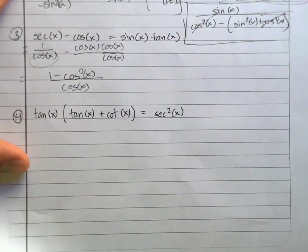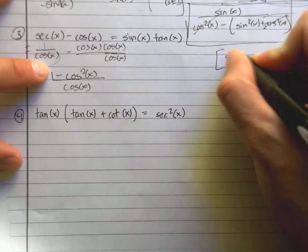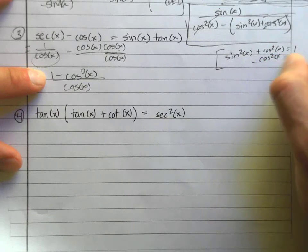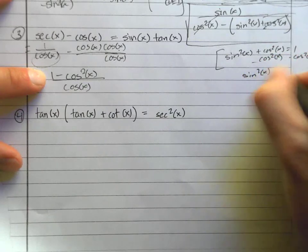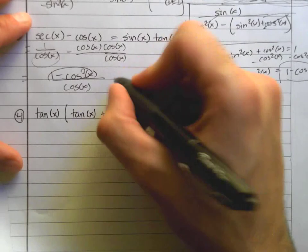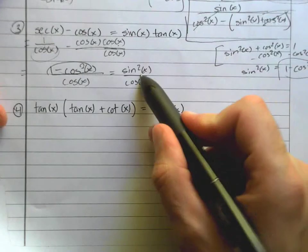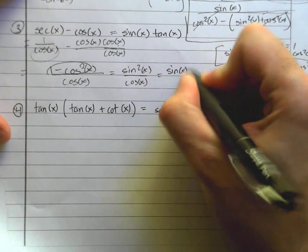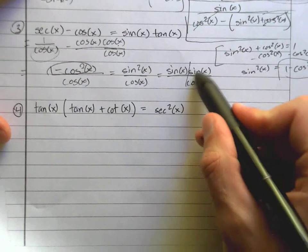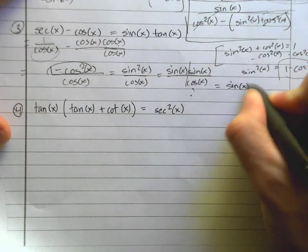What is 1 minus cosine squared? Using the Pythagorean identity, sine squared plus cosine squared equals 1, and subtracting cosine squared gives sine squared equals 1 minus cosine squared. So I replace the numerator with sine squared: sine squared over cosine. By definition, sine squared is sine times sine over cosine. Since sine over cosine is tangent, this equals sine times tangent — which is exactly what we had to prove. Done.